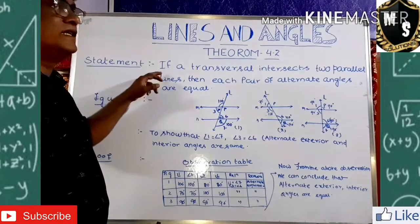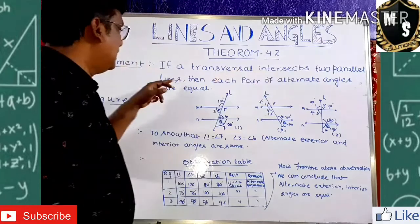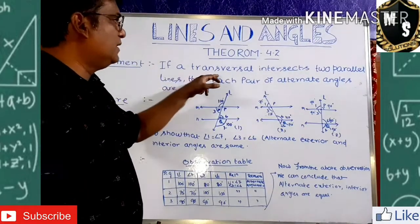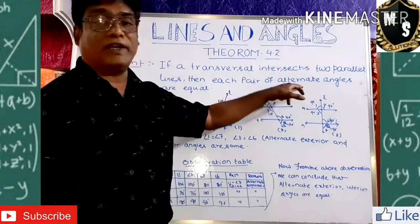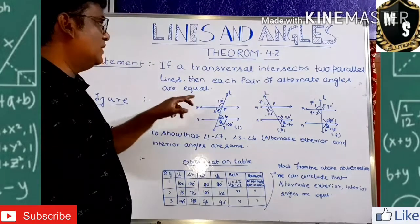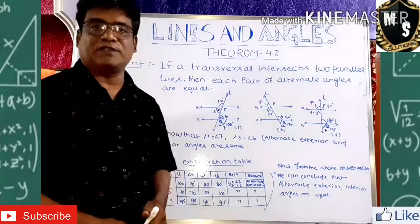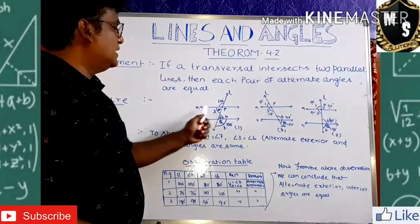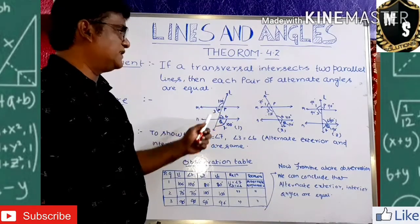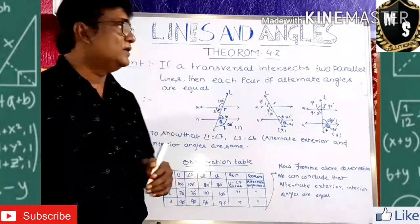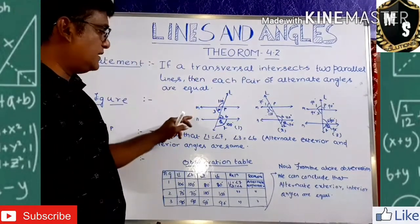The statement of Theorem 4.2 is: if a transversal intersects two parallel lines, then each pair of alternate angles are equal. So the two lines are parallel — M line is parallel to N line — and L is the transversal intersecting them at two distinct points P and Q.